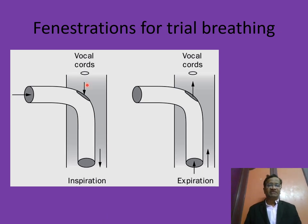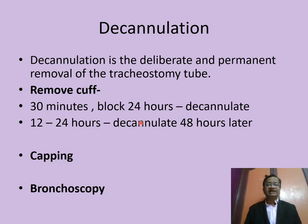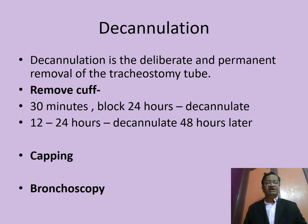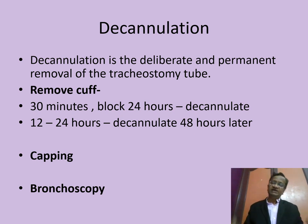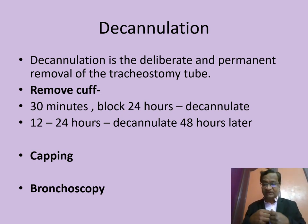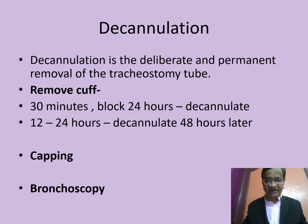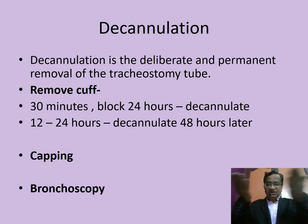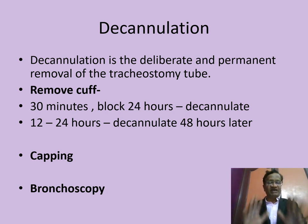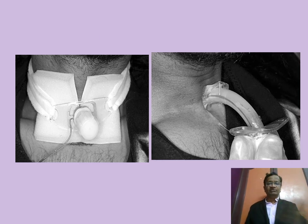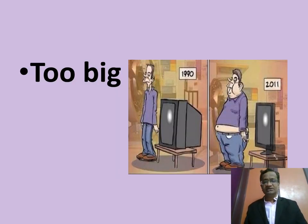For decannulation: allow a trial of spontaneous breathing. Decannulation is the deliberate and permanent removal of the tracheostomy tube. The steps are: deflate the cuff 30 minutes before blocking the tube, block it for 24 hours, then decannulate. Importantly, remove the cuff before blocking — if the cuff is inflated and you block the tube, the patient cannot breathe. With cuff deflated and fenestrations present, the patient can breathe around the tube. Capping trials can be done and bronchoscopy can also be performed to assess.